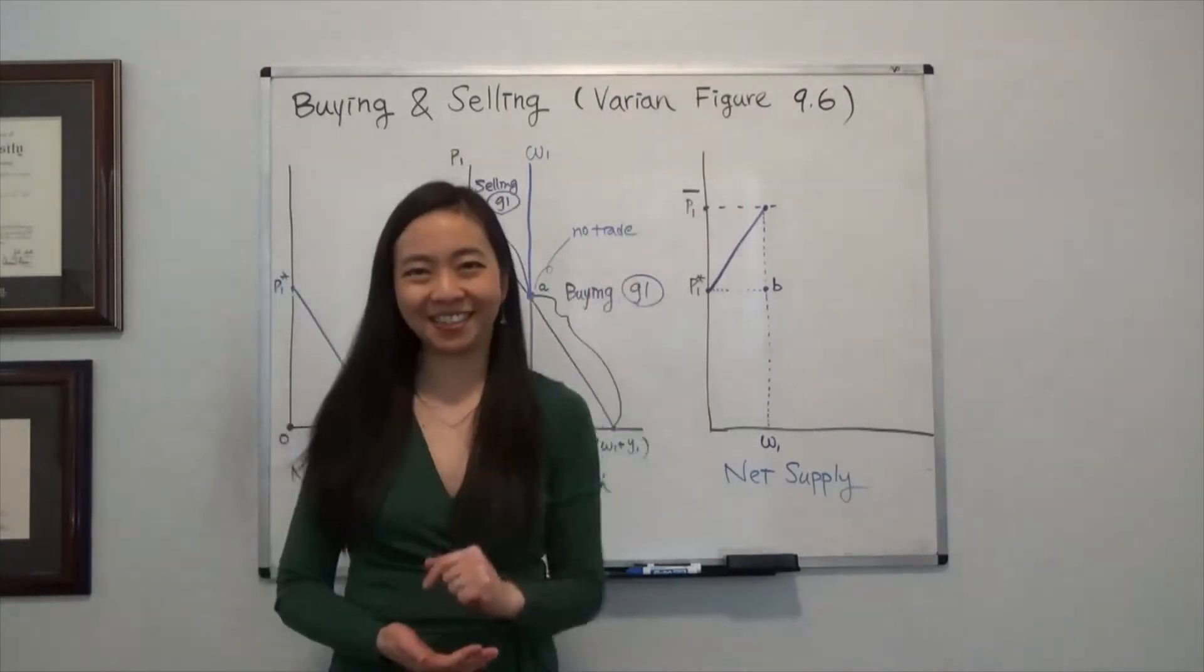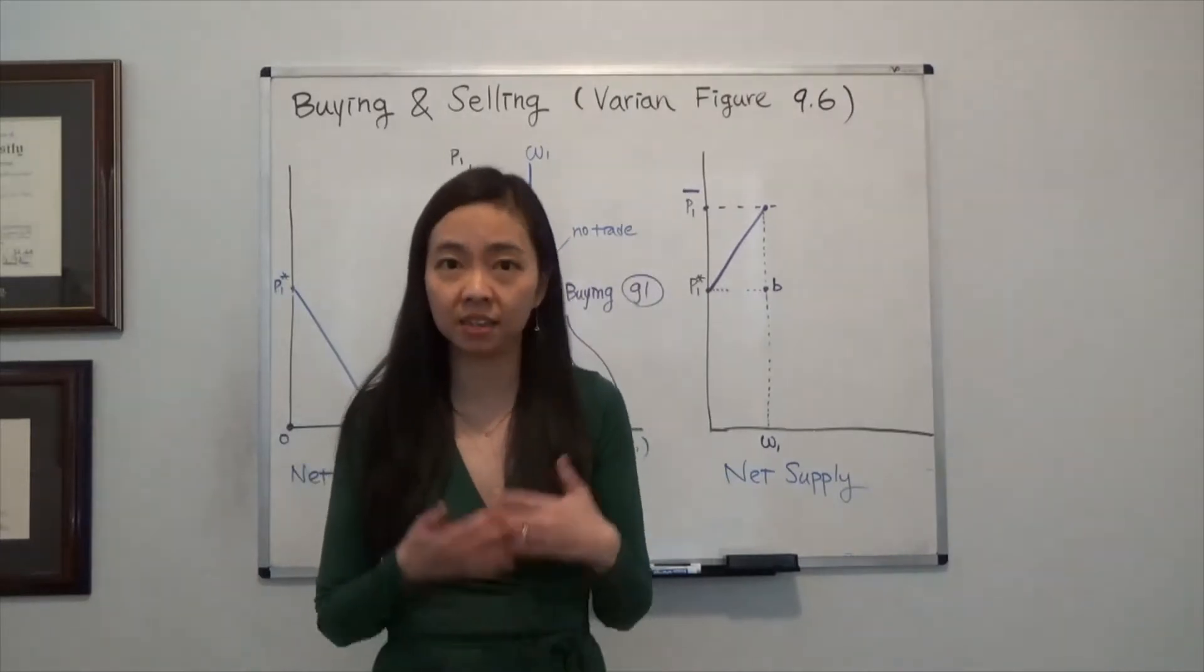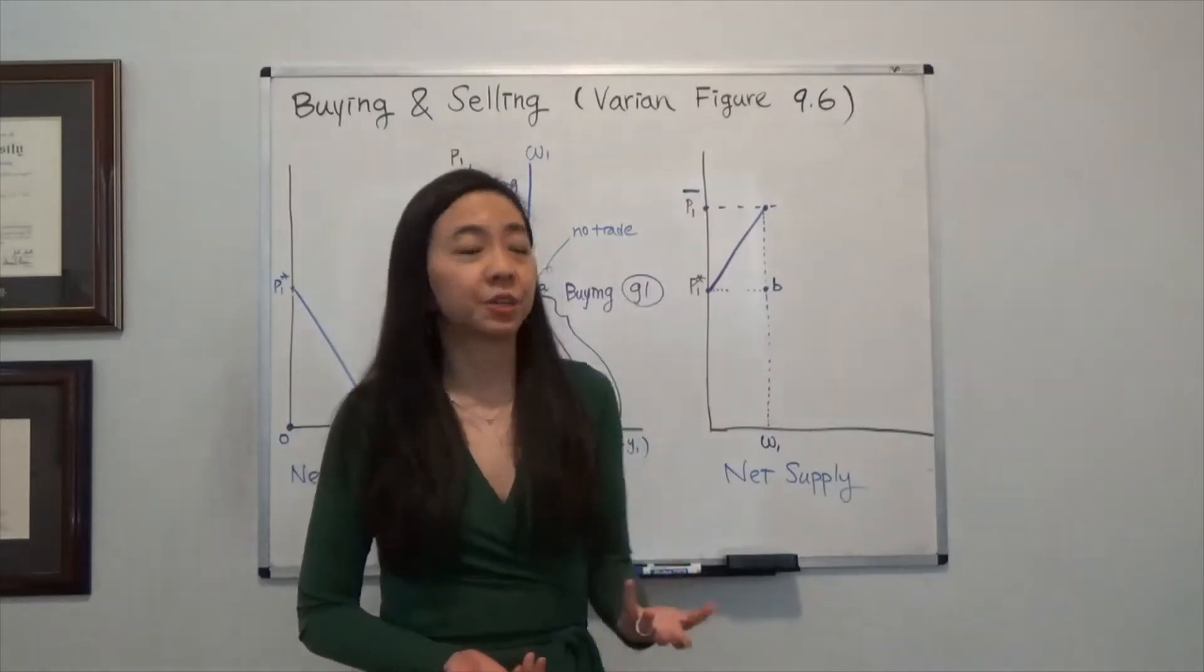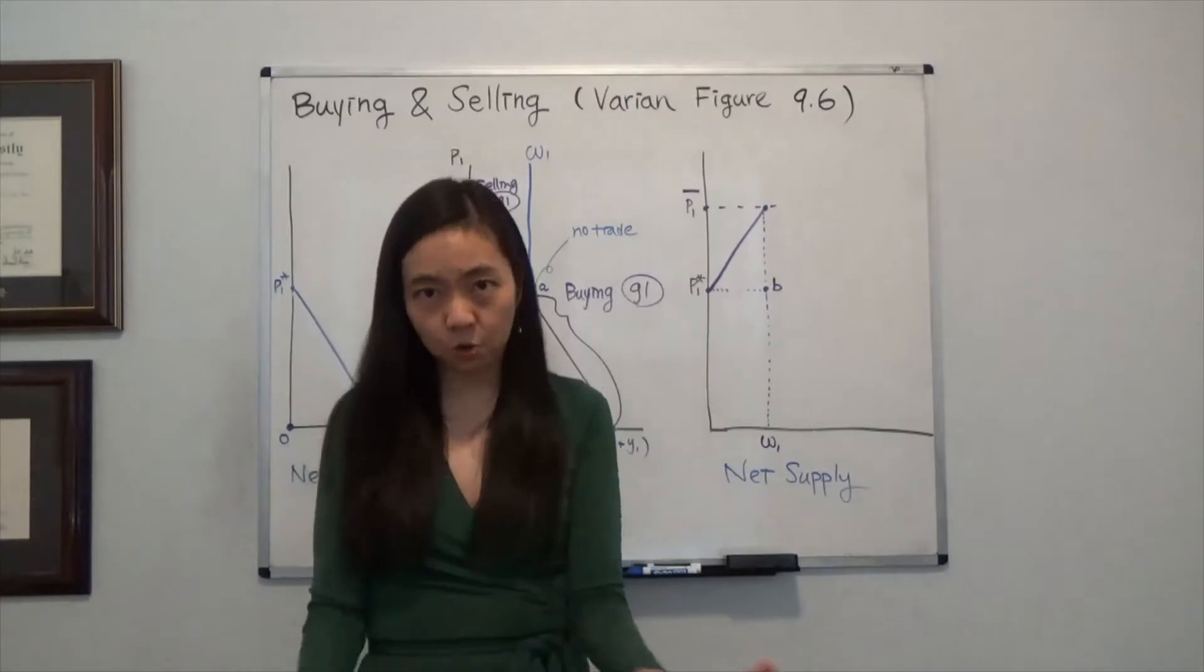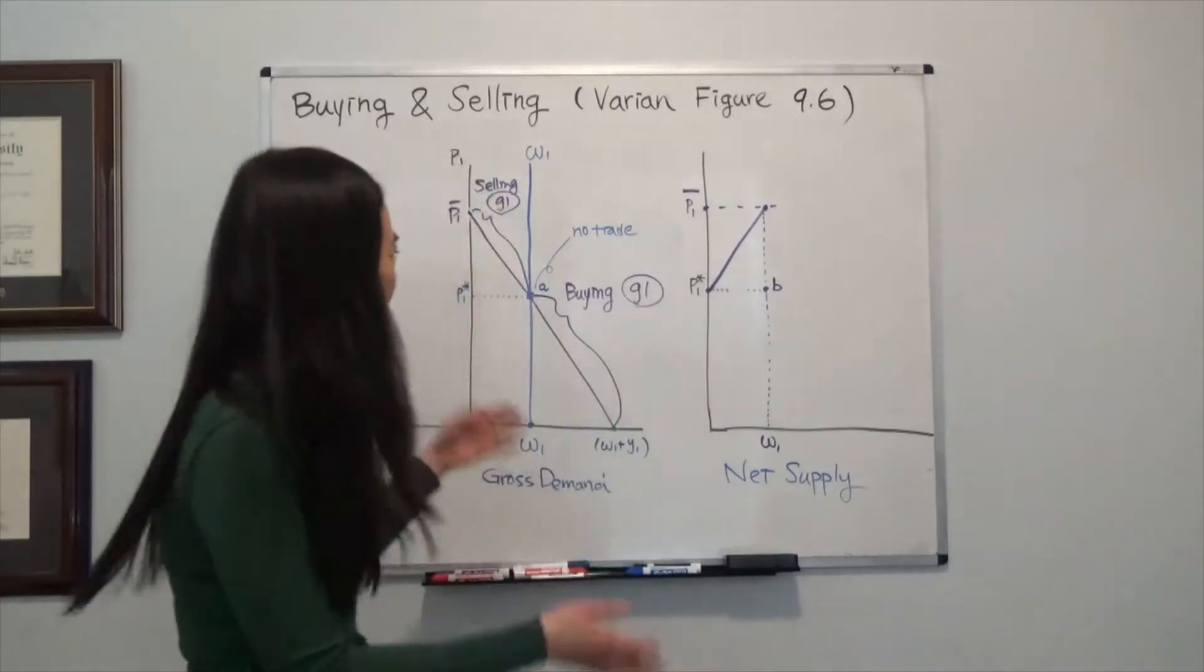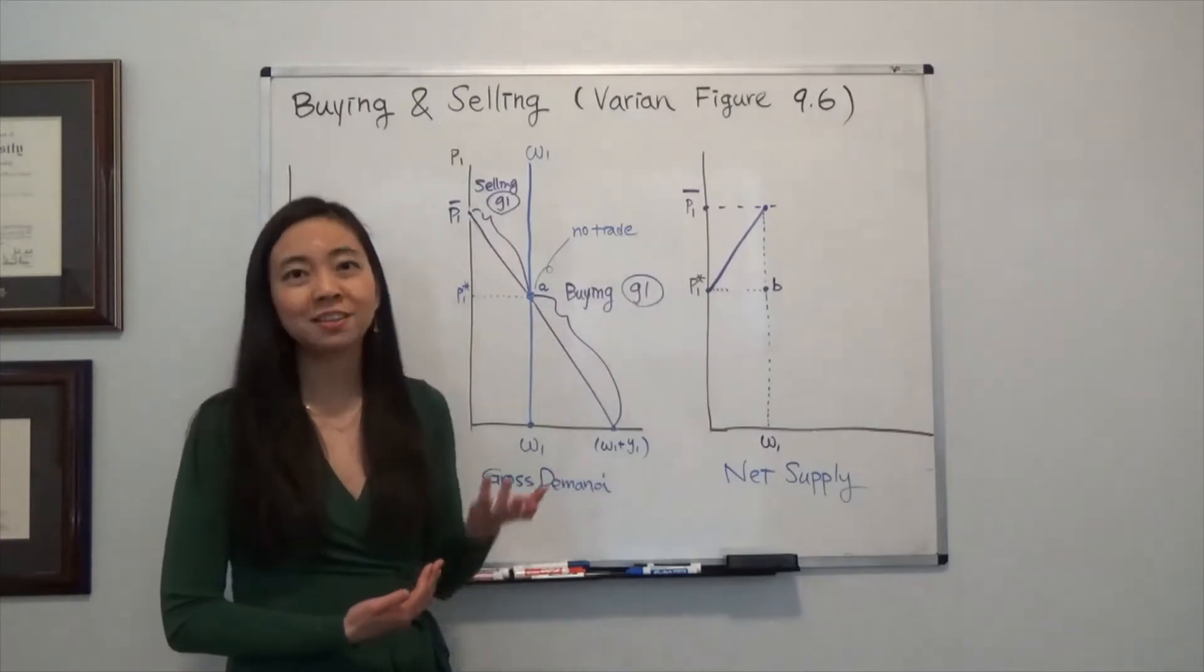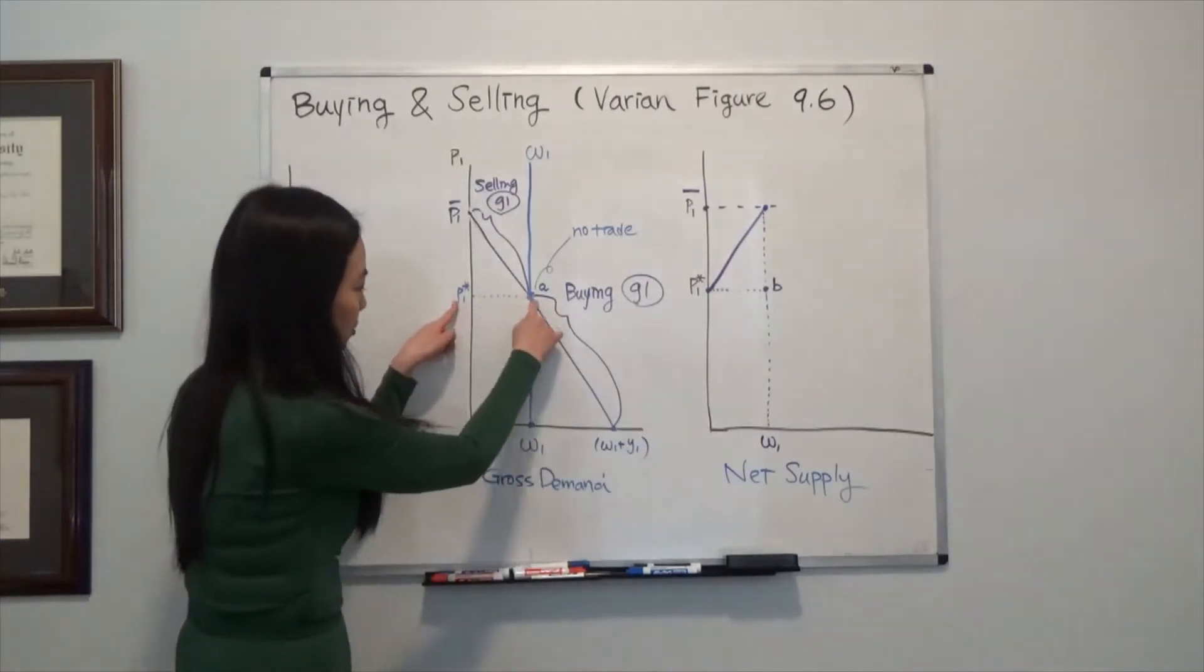Figure 9.6. So remember in the previous video we talked about the initial endowment, omega 1 and omega 2. Now given the initial price P1 star and P2 star, we're not going to trade with anyone. We are just going to consume our initial endowment, omega 1 and omega 2.